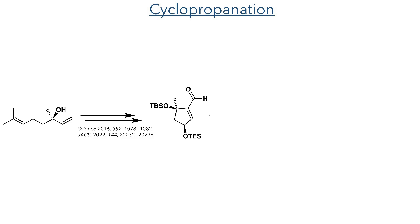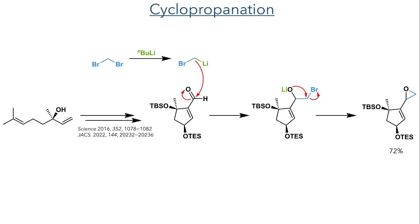This started with the synthesis of a previously reported silyl-protected cyclopentene aldehyde. This underwent a cyclopropanation reaction with dibromomethane and n-BuLi. This undergoes a lithium-halide exchange, generating a nucleophile that attacks the aldehyde, and the resulting lithium-alkoxide intermediate undergoes an intramolecular SN2 reaction to displace the bromide and generate the epoxide in a 72% yield.